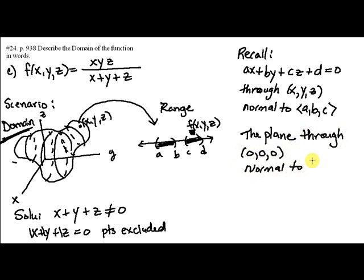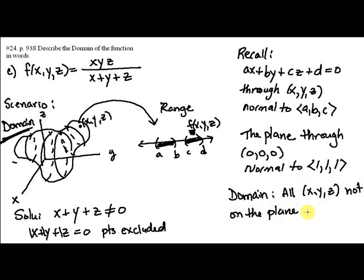Now, if we were to try to sketch this, which, by the way, we were not asked to do, we would have a plane that is going to cut through the origin at a 45 degree angle to the x, y plane, but it's enough to say in this case that the domain is going to be all points x, y, z that are not on the plane that goes through zero, zero, zero, and is normal to one, one, one.